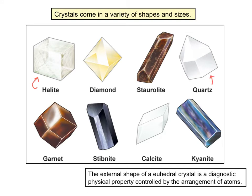Other minerals, because of their chemical compositions, will take on different forms. Halite will always form a cube, as you're seeing here. Quartz will always form a prism-like shape if allowed to grow and develop its perfect form. Calcite will always form a rhombohedron. The external shape of a euhedral crystal is a diagnostic physical property controlled by the arrangement of atoms — it's not random that quartz always forms a prism and halite always forms a cube. It has everything to do with how Na and Cl are bonded within the halite structure, or how Si and O are bonded in the quartz structure.